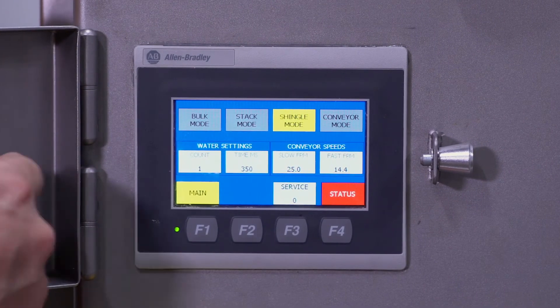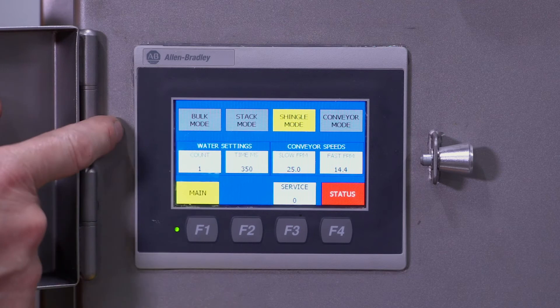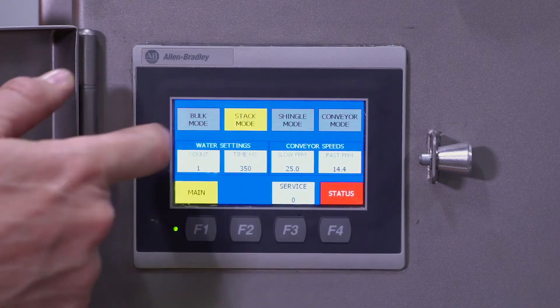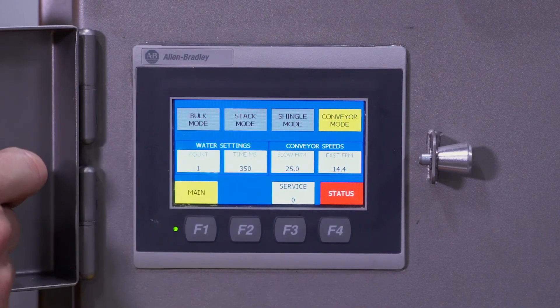On the setup screen, you have the four modes. You have bulk, stack, shingle, conveyor only.